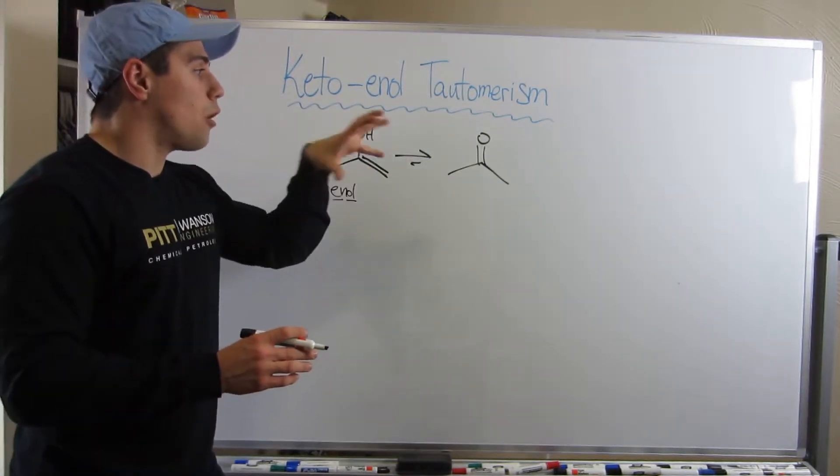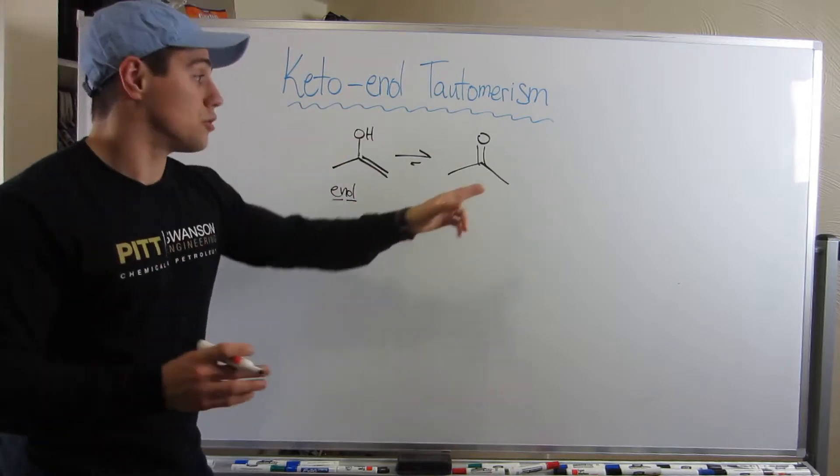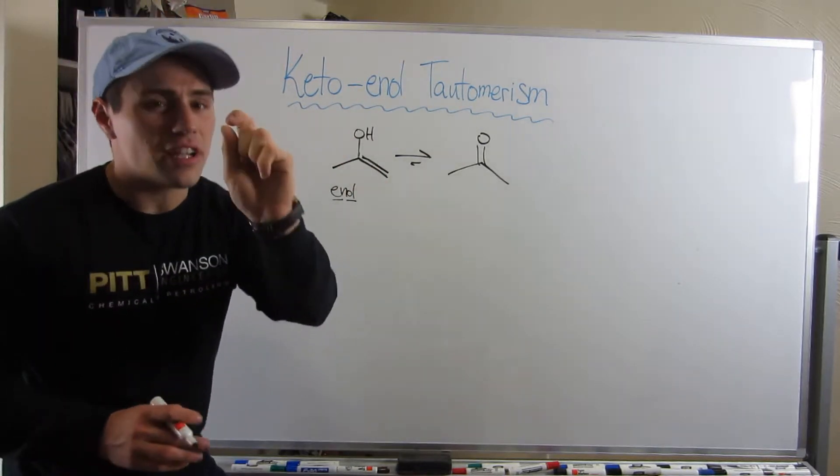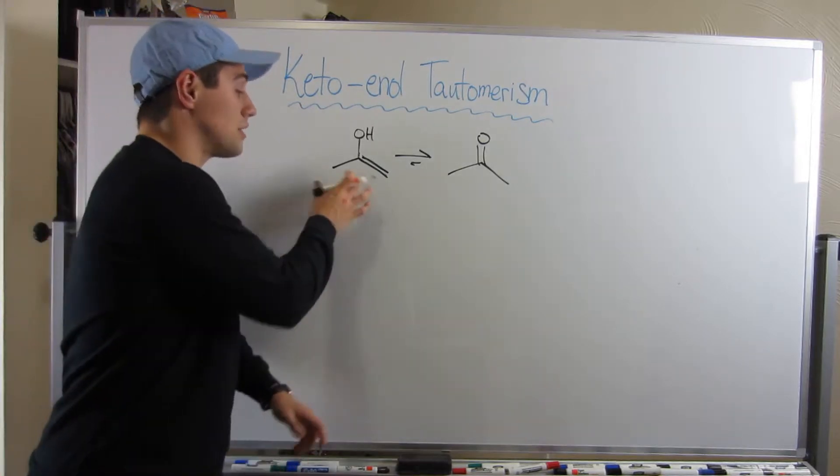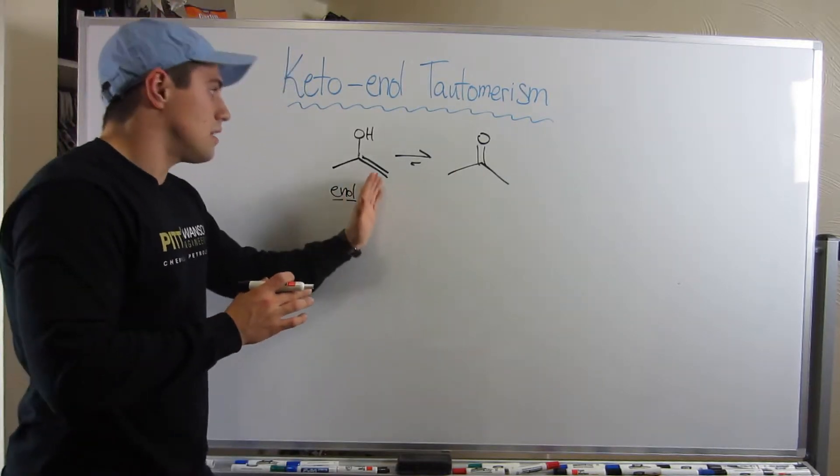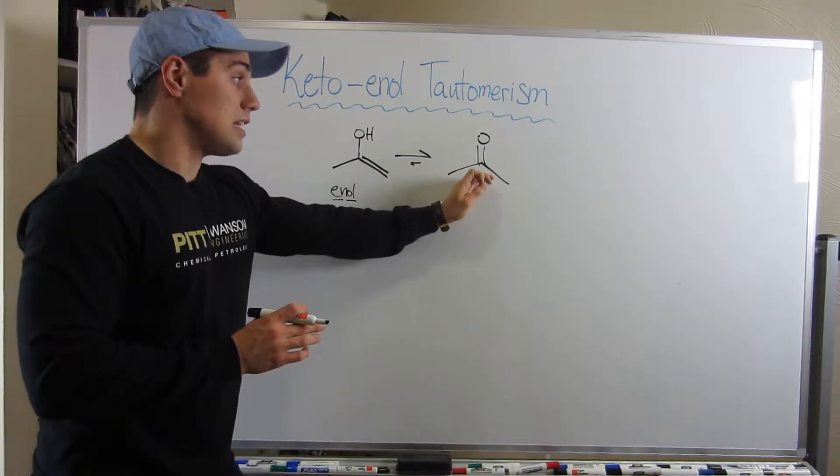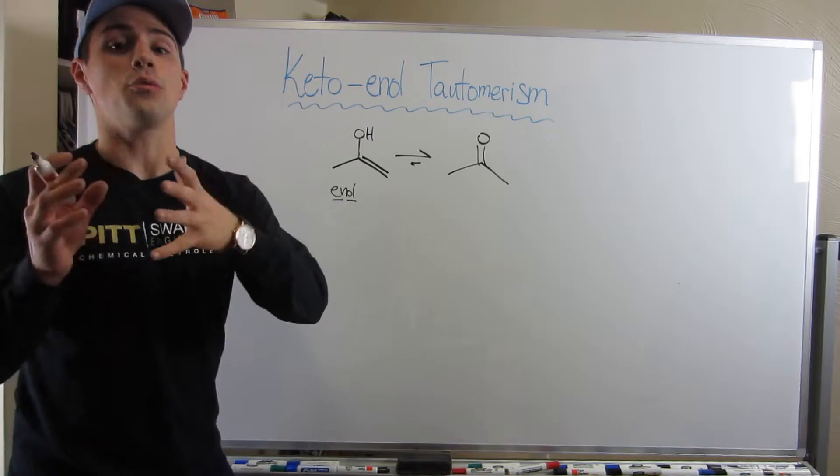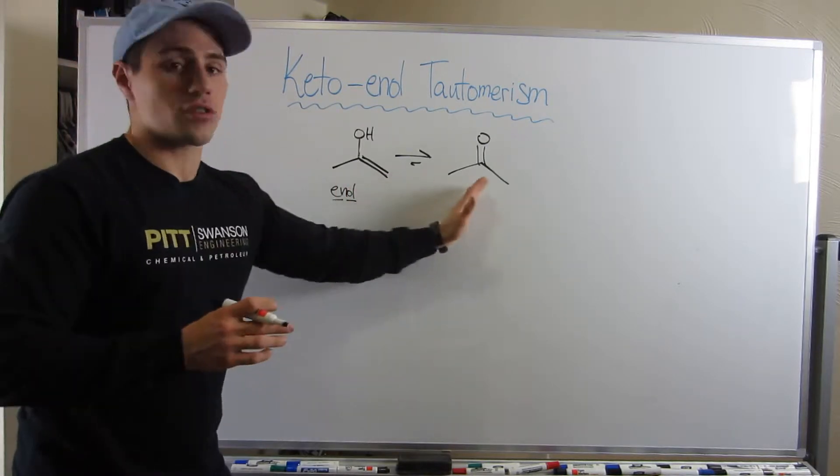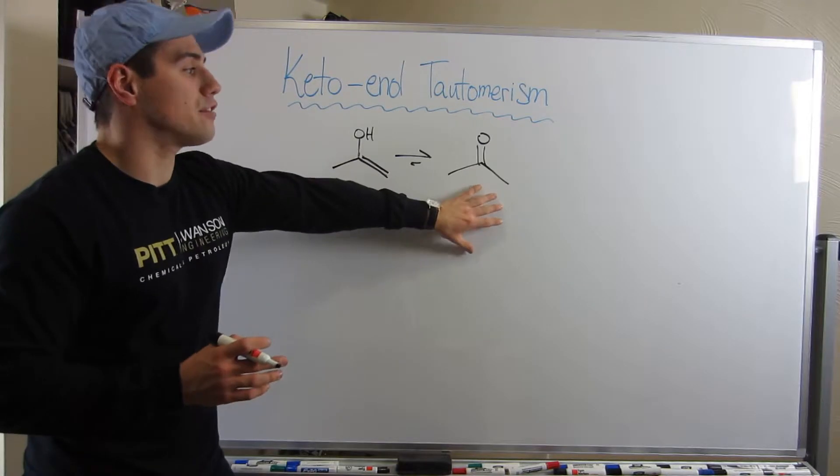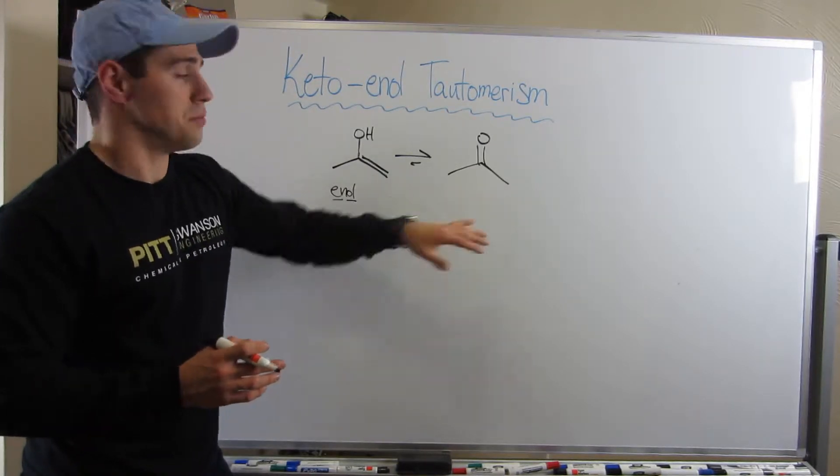The overwhelming majority of your acetone looks like this, but there's going to be a very tiny amount that's going to look like your enol. And constantly, there's some enols flipping to ketones and a very small amount of ketones flipping to enols. It's an equilibrium—the forward and reverse are equal—but the equilibrium heavily favors the ketone.